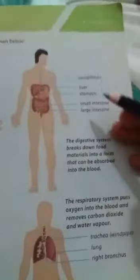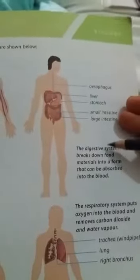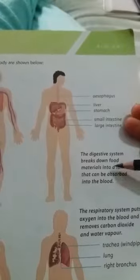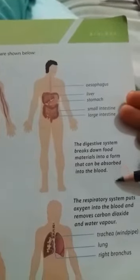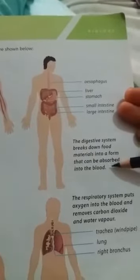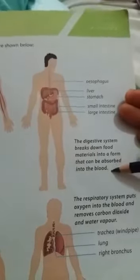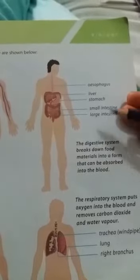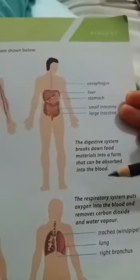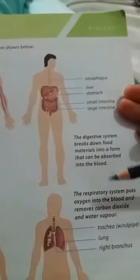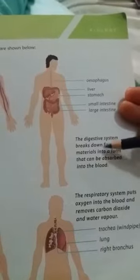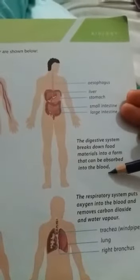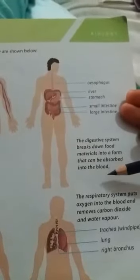This is your digestive system. The digestive system breaks down food material into a form that can be absorbed into the blood.